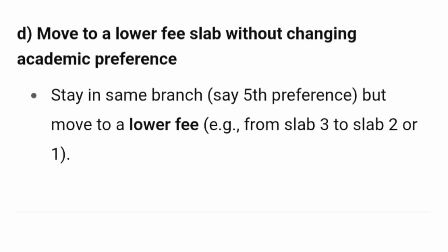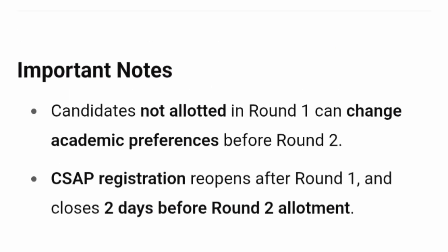Type D upgrade is a move to a lower fee slab without changing the academic preference — meaning the student is happy to stay in the same branch (e.g., their 5th preference), but wants to move to a lower fee slab, such as from slab 3 to slab 2, or from slab 2 to slab 1. They do not want to change the branch at all. These are all the different types of upgrades possible in Amrita University.